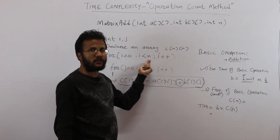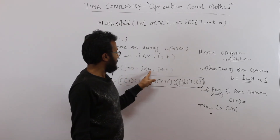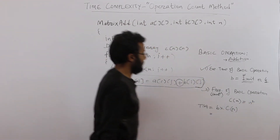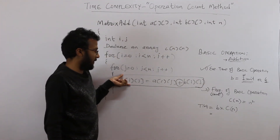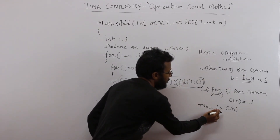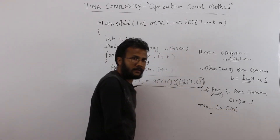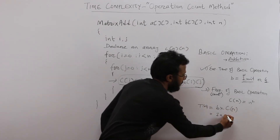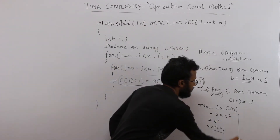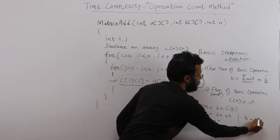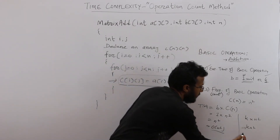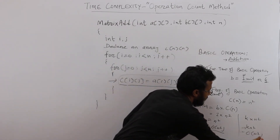The outer loop runs n times (from zero to n minus one) and the inner loop also runs n times, so the innermost statement runs n squared times. Each addition takes one unit, so the time complexity is 1 × n² = n². If you use k, it becomes k × n². Asymptotically, you can ignore the constant k, so the time complexity is O(n²).